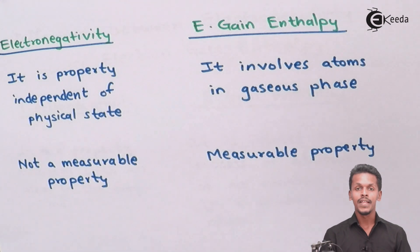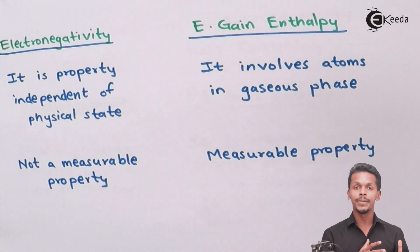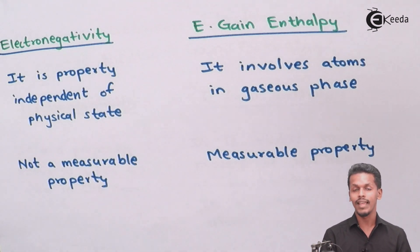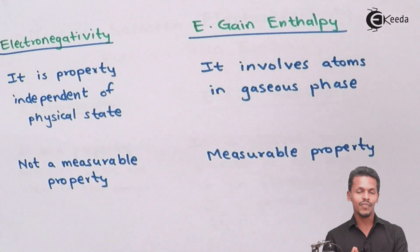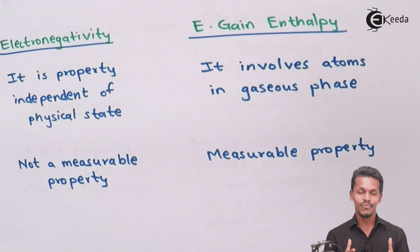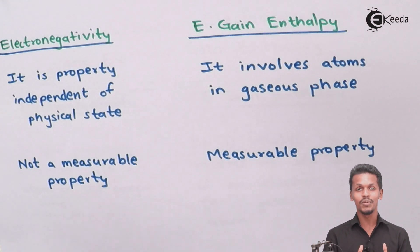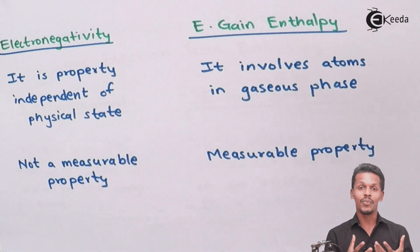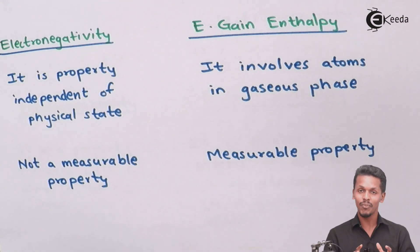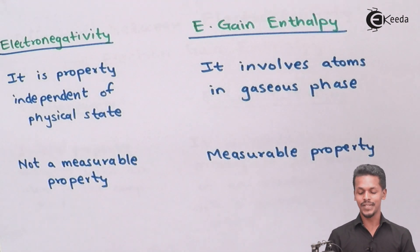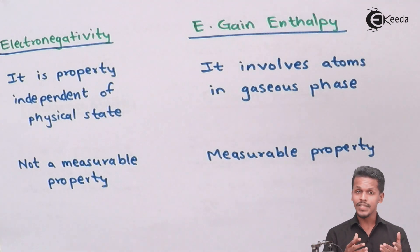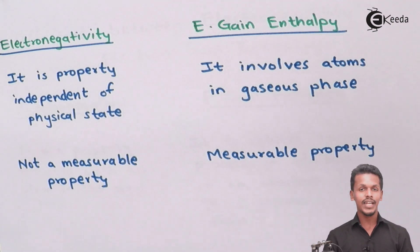So we can detect what would be the change in enthalpy when an electron is gained by an atom — that is the specificity of electron gain enthalpy. This was a major difference between these two terms: electronegativity and electron gain enthalpy. Both contain the word 'electron' but there is a huge difference between these two concepts and properties.